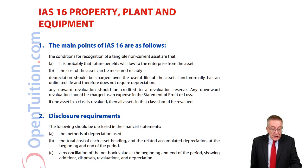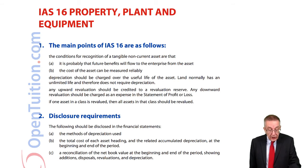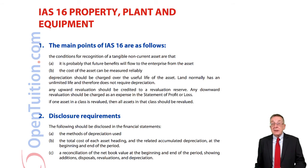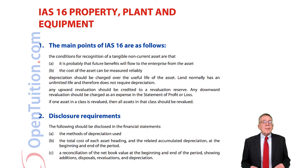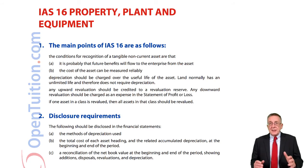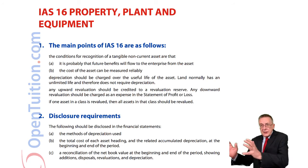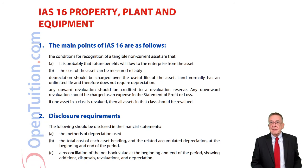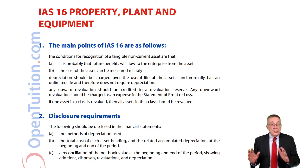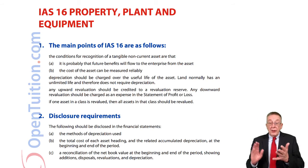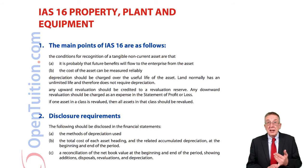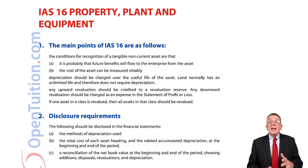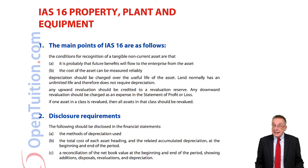We have to disclose the total cost of each asset heading and the accumulated depreciation at the beginning and end of the period. So for each type of asset — motor cars, buildings, etc. — we have to have a note showing what the total cost was at the beginning of the year, what the total accumulated depreciation was at the beginning of the year, and similarly what the total cost and total accumulated depreciation are at the end of the year.